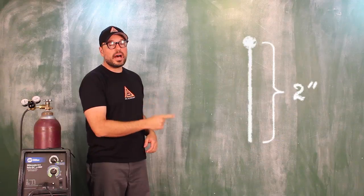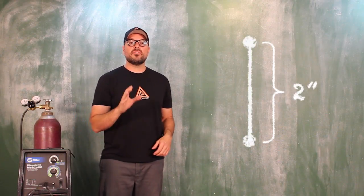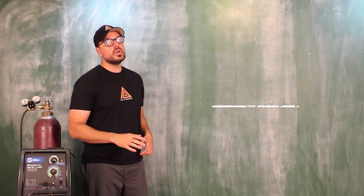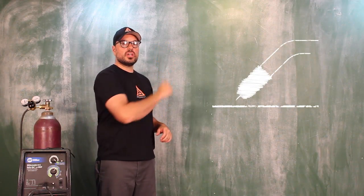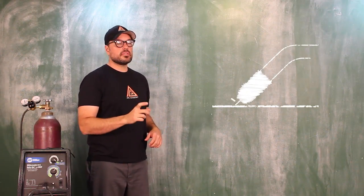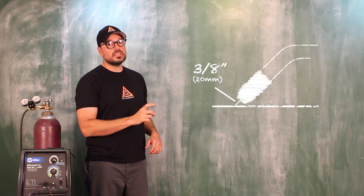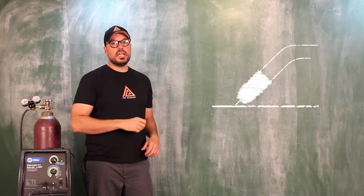Now, 'attack' for our purpose—what you want to do is you want to set up, you want to just lightly touch the wire down, keep that three-eighths inch stick-out distance, and then you're going to pull the trigger and you're just going to do a two-count: one, two.